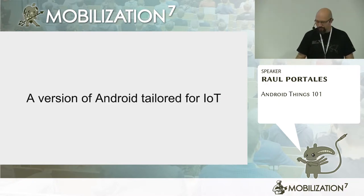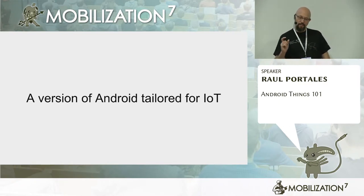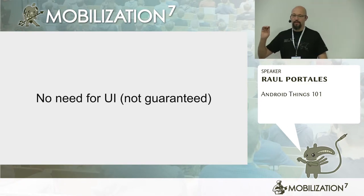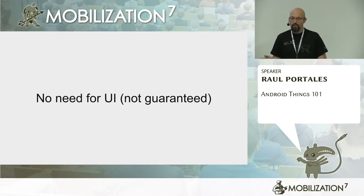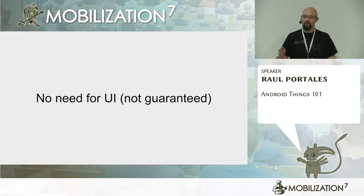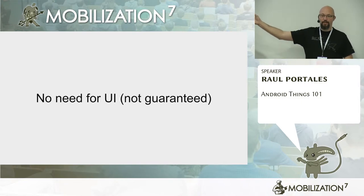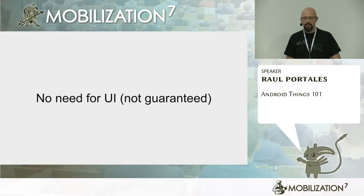Android Things was announced in December last year, and it is a version of Android tailored for the Internet of Things. It's smaller — although still quite big — and dedicated for handling peripherals that are not standard like a phone. The first big thing is that there is no need for UI; it's not guaranteed. This does not mean you cannot have UI with Android Things. What it means is the operating system will not work as if there is a UI, because you can build something to put in the wild that doesn't need a screen at all. But you can have your own UI on Android Things if you want to.